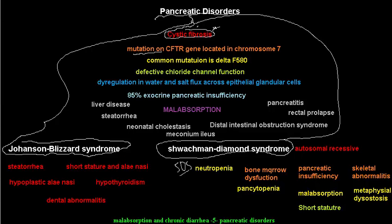Cystic fibrosis is caused by a mutation in the CFTR gene, located on chromosome 7. The most common mutation is delta F508. This mutation leads to defective chloride channel function.